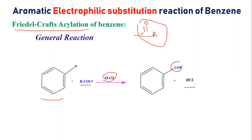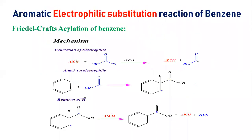How is the mechanism? What are the steps? First of all, the mechanism. In the mechanism, you have to see what you have. The generation of electrophile is the first step, generation of electrophile.